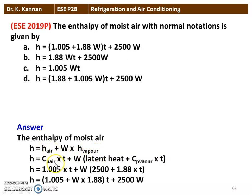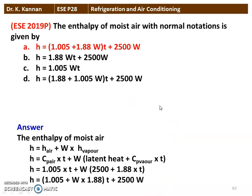Enthalpy of dry air equals specific heat of air times temperature plus specific humidity times enthalpy of vapor, where enthalpy of vapor equals latent heat of vaporization plus specific heat of vapor times temperature. Substituting values: H = 1.005·T + W·(2500 + 1.88·T). Regrouping: H = (1.005 + 1.88·W)·T + 2500·W. The correct option is A.